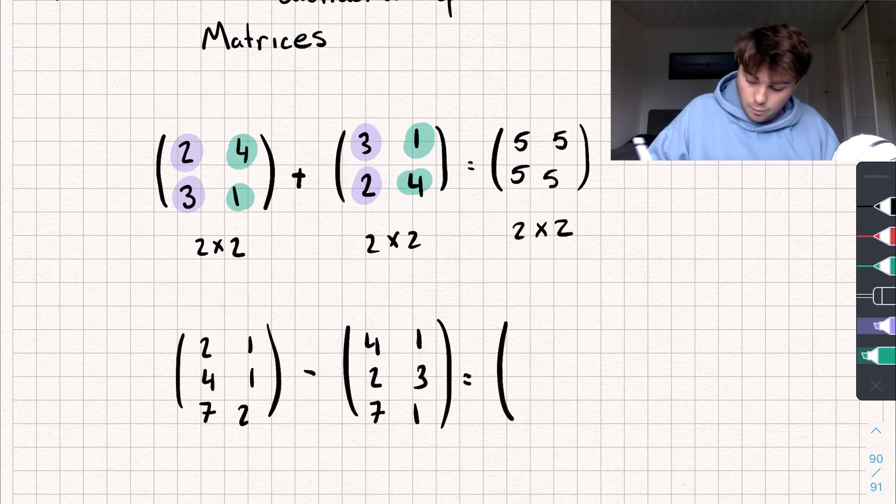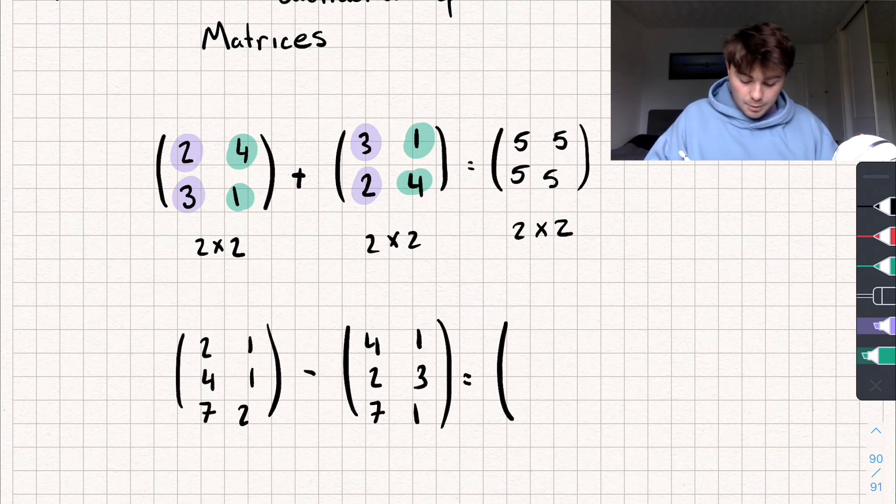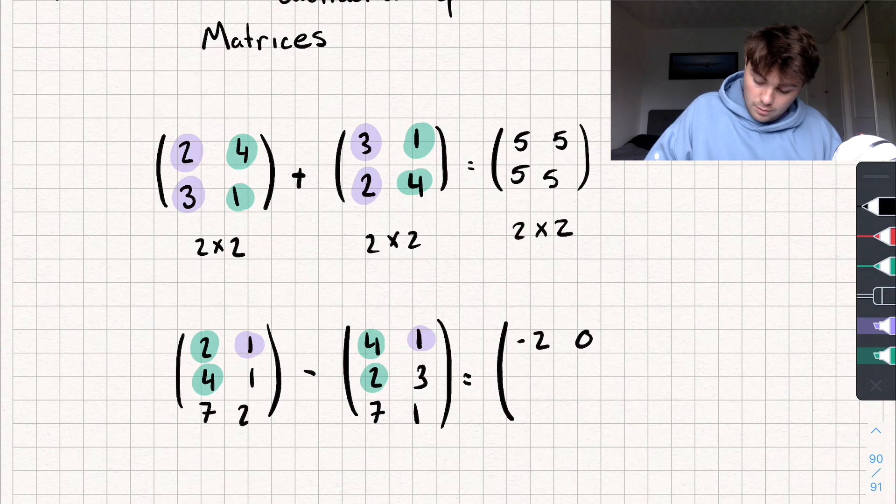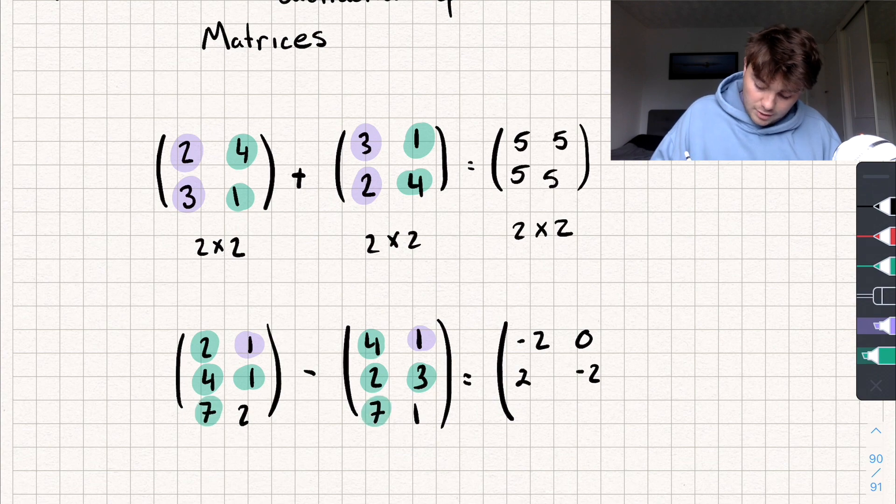Okay, so when we do it, again we just subtract the corresponding elements. So I do 2 subtract 4, well that gives me negative 2. I do 1 subtract 1, that gives me 0. 4 subtract 2, again it's going to be positive 2. 1 subtract 3, that's negative 2. 7 subtract 7 is 0. And finally, 2 subtract 1 is going to give me 1.